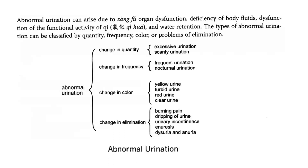To summarize, abnormal urination can arise due to zang-fu organ dysfunction, deficiency of body fluids, dysfunction of the functional activity of qi, and water retention. The types of abnormal urination can be classified by quantity, frequency, color, or problems of elimination.